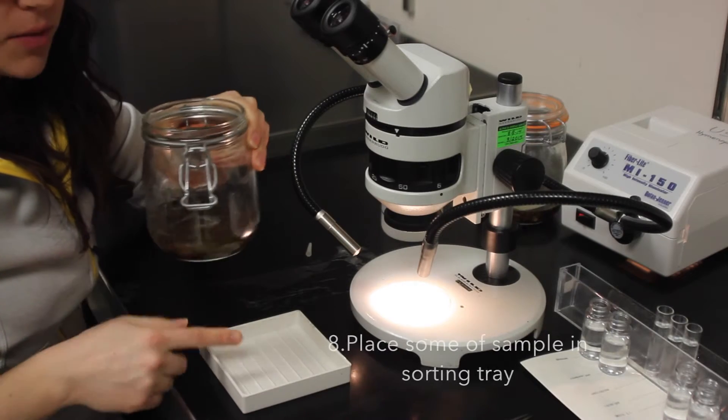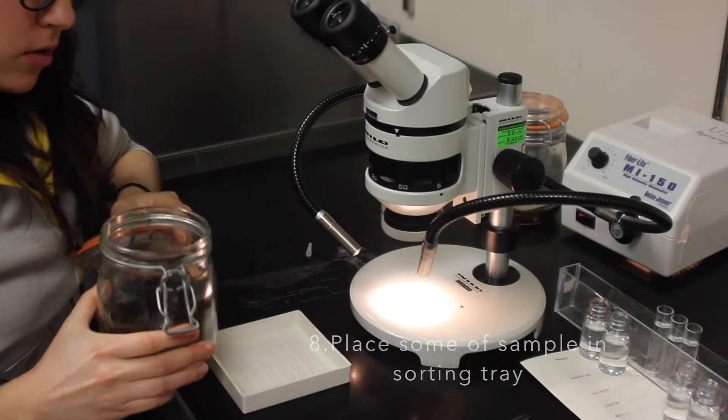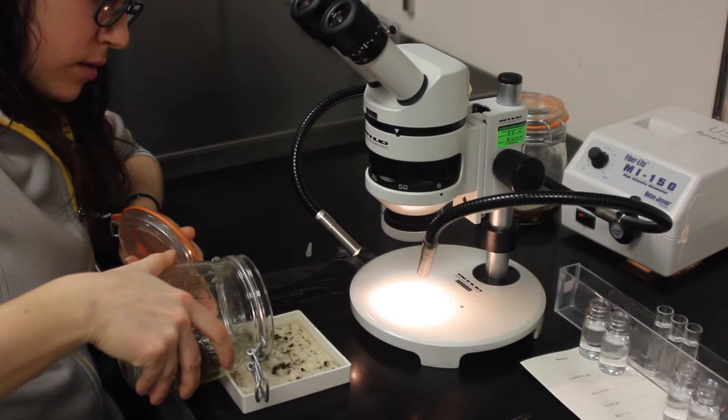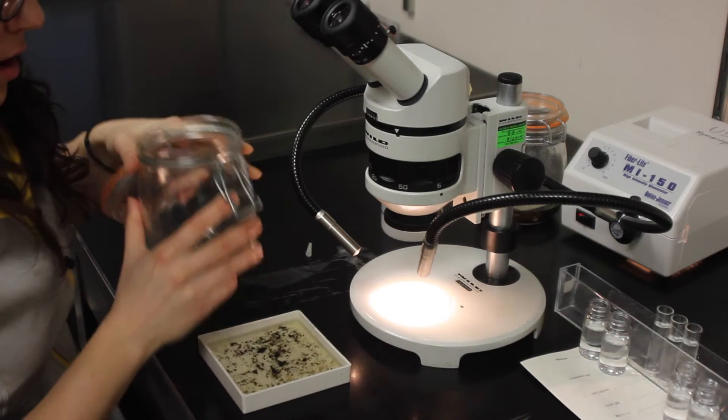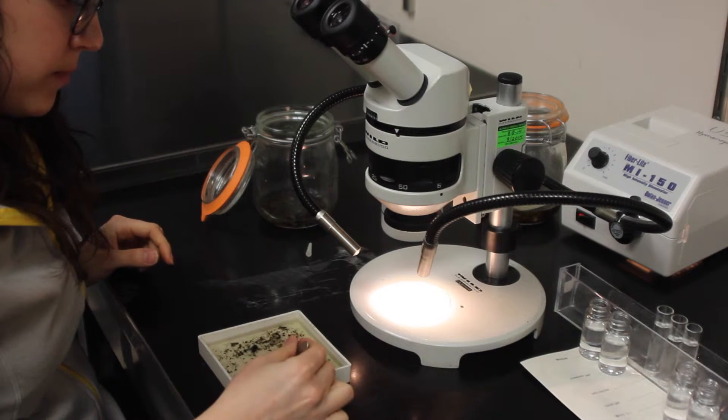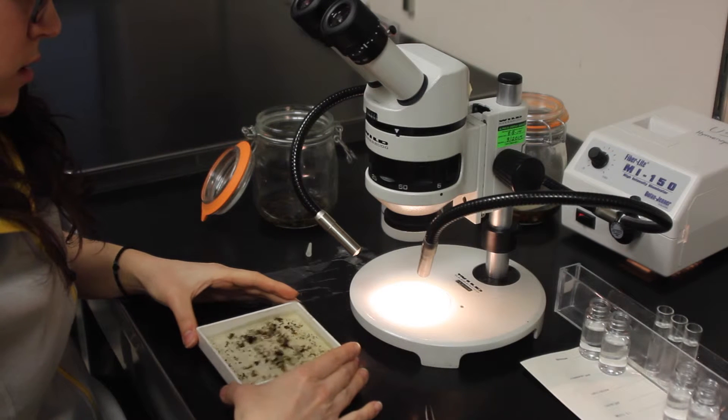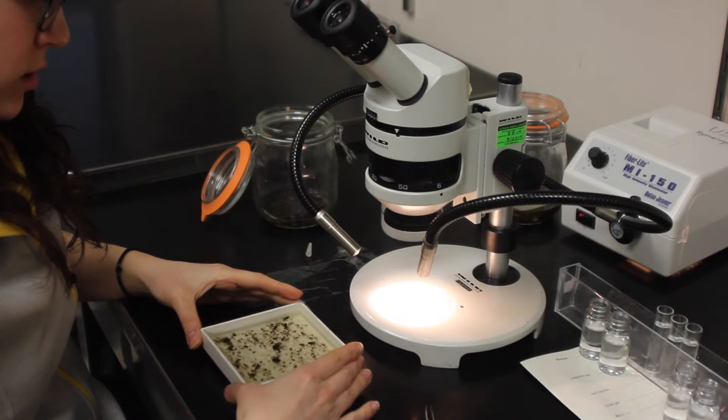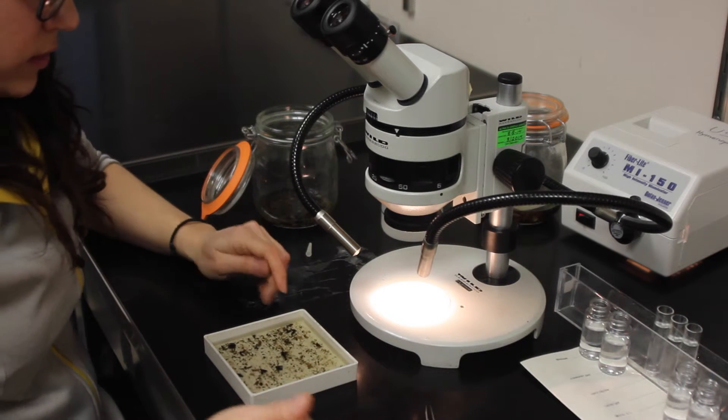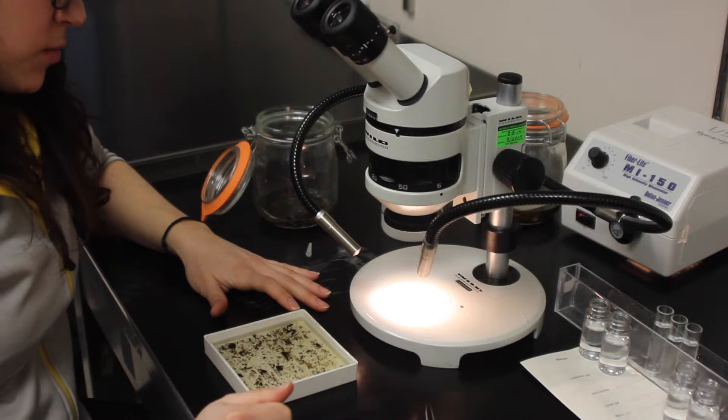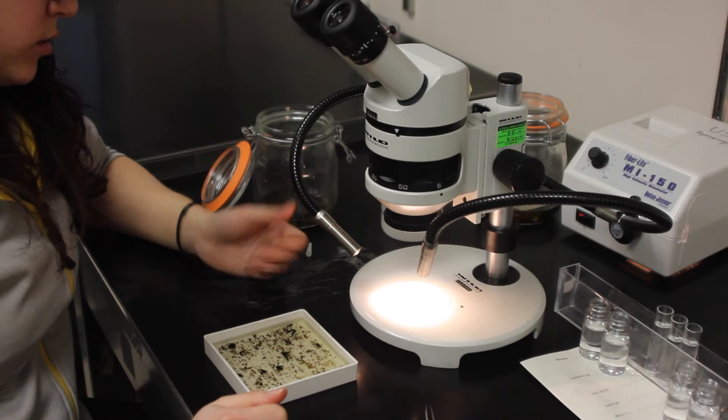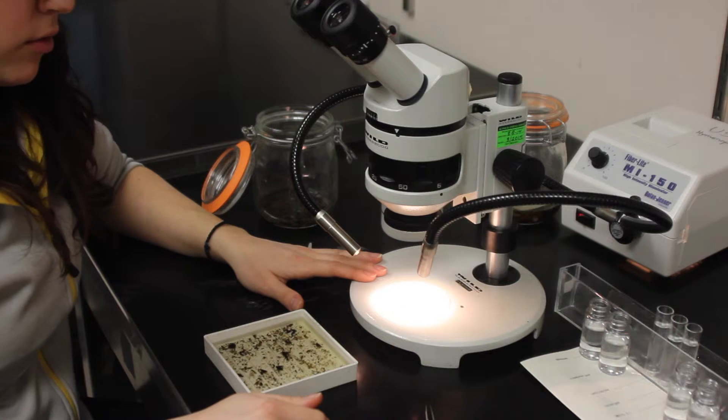We're going to pour our sample into the small sorting tray. Give it a swirl and pour it in. This sample is dense, so we're only going to put half of our specimen in so that we can see what's going on. We're going to give this a shake to make sure that our specimen are spread out evenly. And if you can see, the small sorting tray has rows, which allows you to visualize your organisms left through right when you're looking through your microscope.